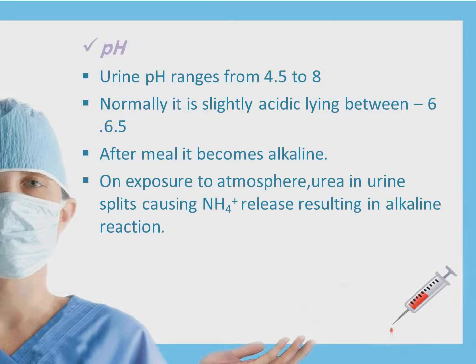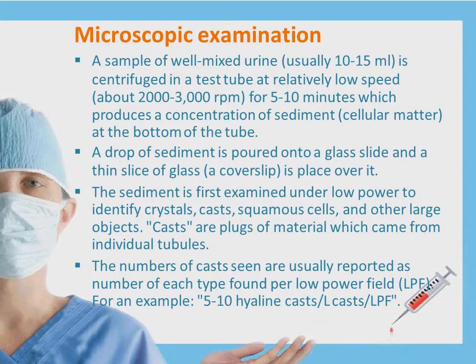The pH is also one of the factors that can be measured in the renal function test. It ranges from 4.5 to 8. Normally it is slightly acidic, between 6 and 6.5. After a meal it becomes alkaline. On exposure to the atmosphere, urea in the urine could split, causing ammonia to be released, and this will convert the pH to an alkaline reaction. So we have finished with the macroscopical examination.